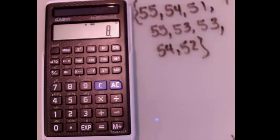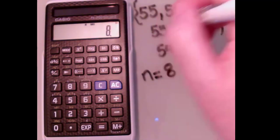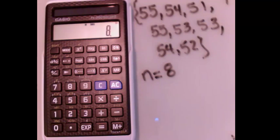it tells me that there are 8 numbers in my data. So let's check: 1, 2, 3, 4, 5, 6, 7, 8. Correct. So then the next thing is,